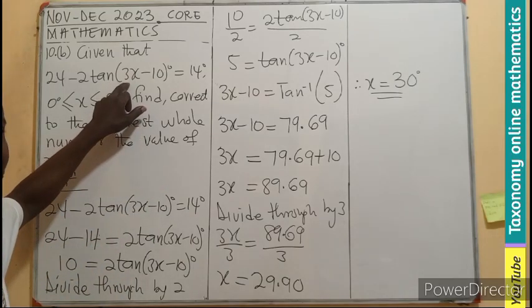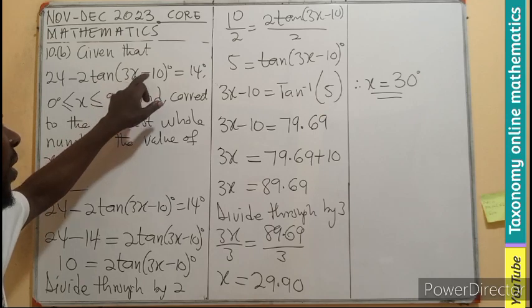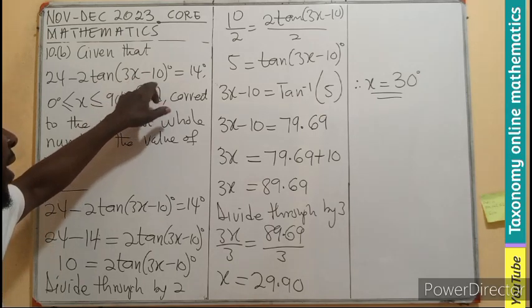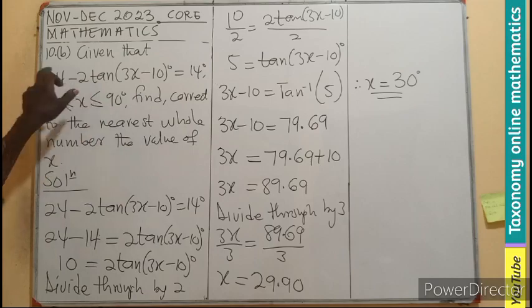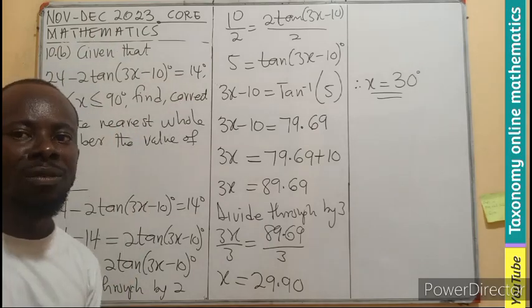30 times this, that will give us 90. Minus this, that will be 80. So tan 80, twice of that minus this will give us 14.